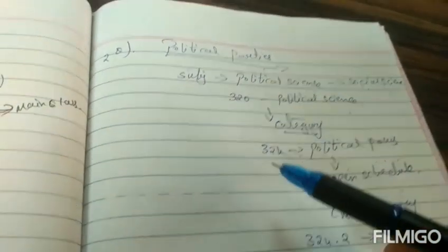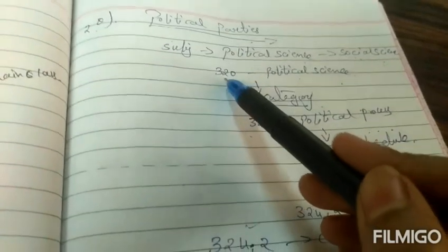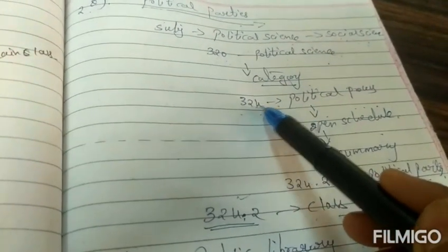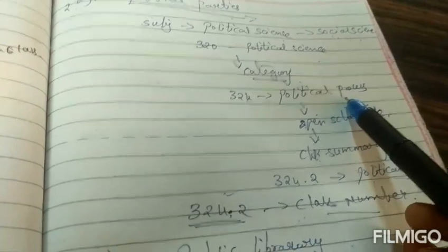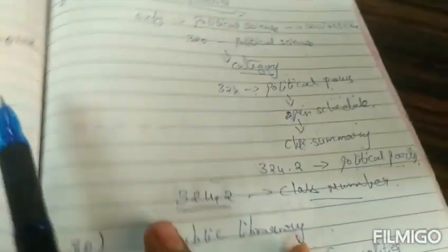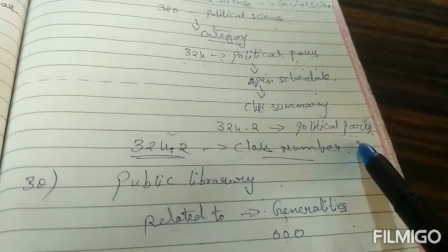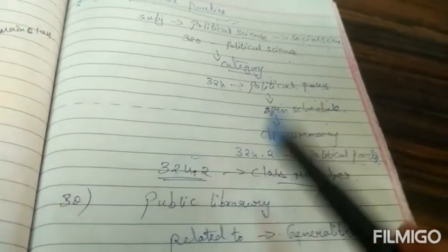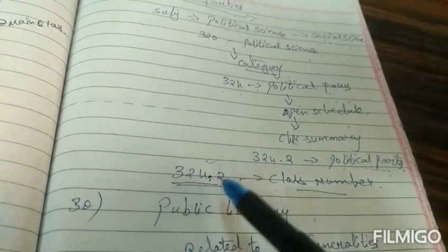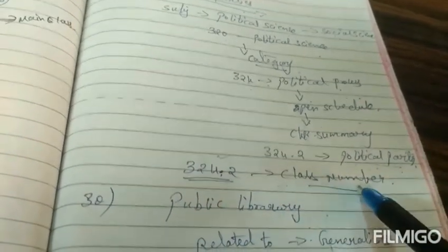Once we go to this, will you get political parties as it is? No, we need to search in this. So political parties number is 320. In that, again if you see the category, in 24 you can see political process. Again if you open that schedule and check the summary, then in point 2 you can see political parties. Then our class number is 324.2.